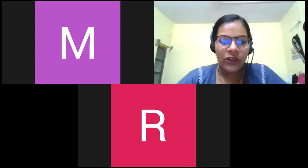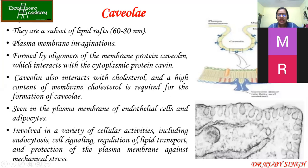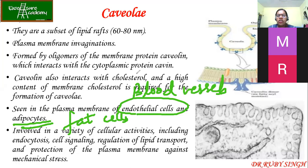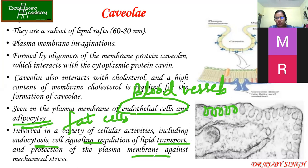Caveolae are found in endothelial cells (found in blood vessels) and adipocytes (fat cells/fat tissue). You can see so many invaginations in these cells. This also helps in increasing the surface area of the plasma membrane. Caveolae are involved in many cellular activities like endothelial signaling, regulation of lipid transport, and protection of the plasma membrane against mechanical stress — acting like a cushion.